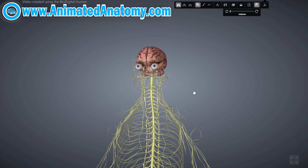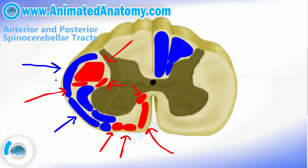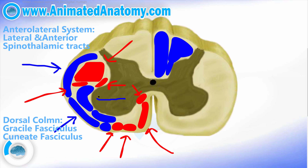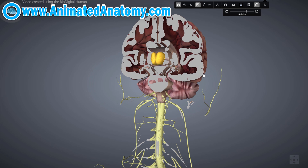Now I want to talk about the sensory and afferent pathways. We divide these into two groups: conscious sensory information, and afferent information that is not conscious — the kind that goes to the cerebellum, for example. Here we have the anterior and posterior spinocerebellar tracts. As for the somatosensory organization, we have the anterolateral system including the lateral and anterior spinothalamic tracts. The dorsal column consists of the gracile fasciculus and the cuneate fasciculus — the tracts carrying conscious information, the information we are fully aware of, such as when you touch an object.